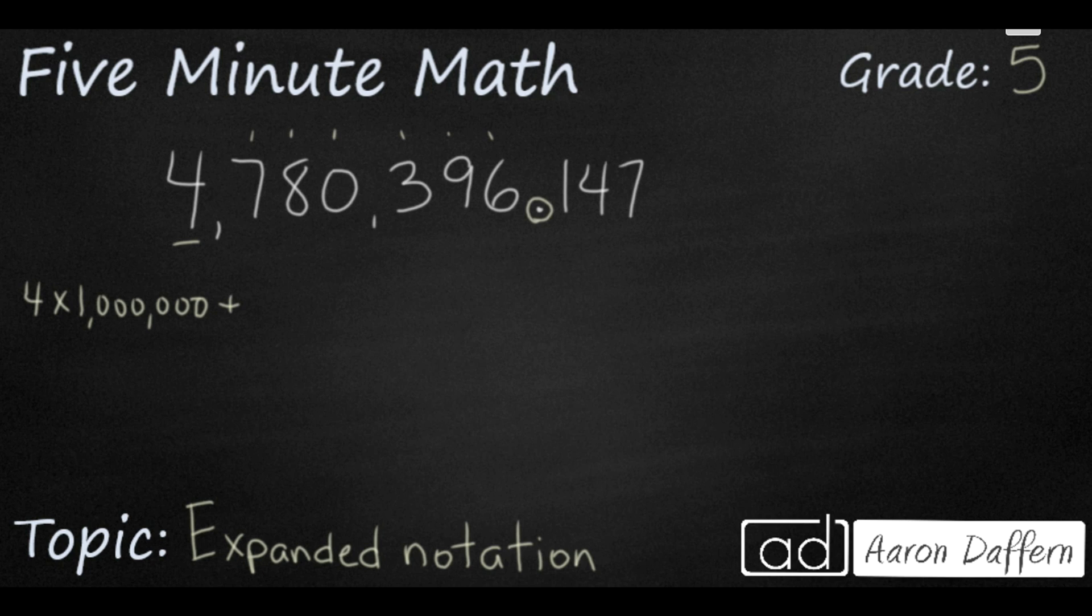I'm going to add to that the next place value. So, I have a 7 and this is in the hundred thousandths place. So, I'm going to multiply that 7 times its place value or 7 times 100,000. Again, if you're not sure how to write 100,000, just count how many digits are after that 7 until you get to the decimal point. 1, 2, 3, 4, 5. So, you have a 1 with 5 zeros afterwards.